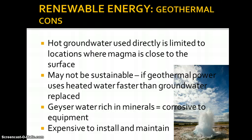The cons for geothermal: if you want to use the warm groundwater directly, you need to be located where magma is close to the surface, which is limiting. It may not be sustainable if the geothermal power uses heated water faster than groundwater can be replaced. Geyser water is rich in minerals and corrosive. It's expensive to install and maintain. When we bought our house it already had geothermal, so we benefited without the upfront cost — but otherwise you do have to pay that upfront cost, though in the long run it saves on your electric bill.